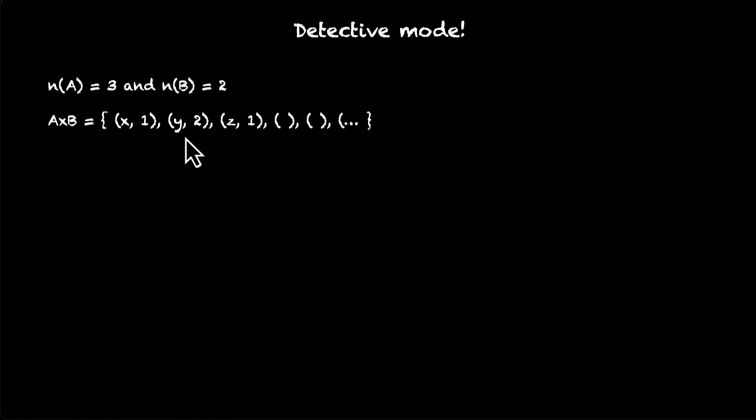So A times B is this. We know its first element, second element, third element, but a lot of its elements are missing. So here's what you know about A and B and A times B. And you need to find the sets A and B. Try this challenge yourself.